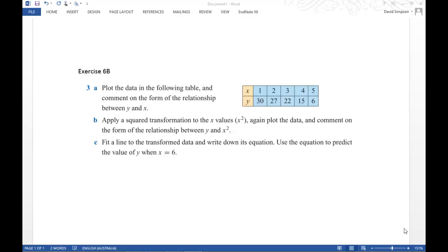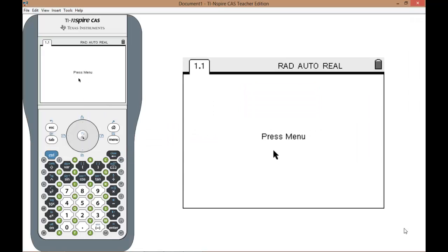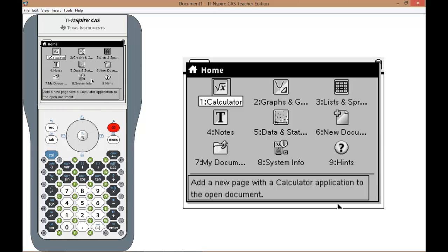Alright, so to answer this question the first thing you need to do is enter this data table into a graphics calculator. So here we go. Using a graphics calculator you need to go to home and you are wanting to add a list and a spreadsheet.